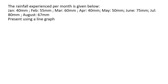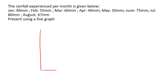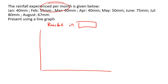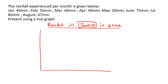The rainfall experienced per month is given below. In January there was 40 millimeters, in May there was 50 — they're showing us the rainfall. We need to present the information using a line graph. The way a line graph works: we need a y-axis and an x-axis. We're always going to do three things — put a heading, such as 'Rainfall in Town A in the year 2042.' On your x-axis you would have the month, and on the y-axis you could say 'Rainfall,' measured in millimeters.